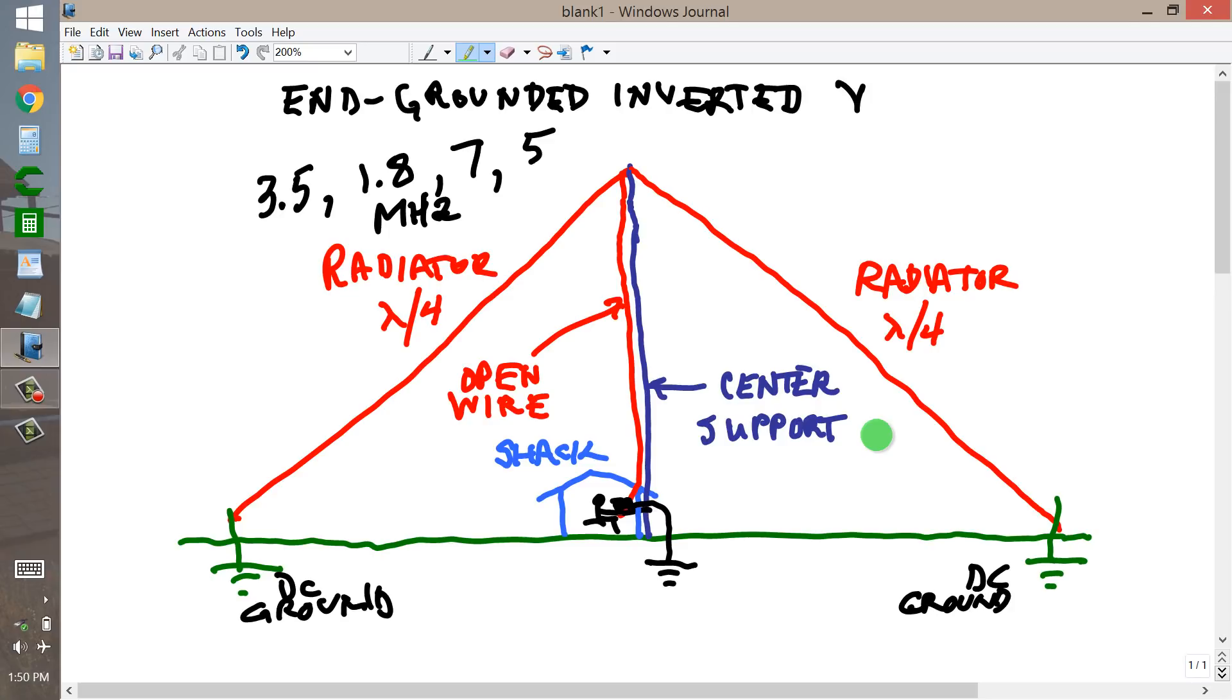If lightning strikes nearby, the electrostatic discharge will take place at the ends of the antenna and not at your station, particularly if you have the feed line disconnected.